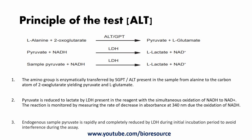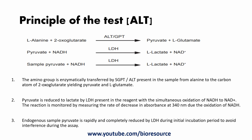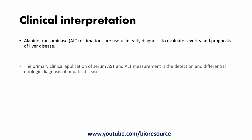Regarding the principle of the ALT test: the amino group is enzymatically transferred by SGPT or ALT present in the sample from alanine to the carbon atom of oxoglutarate, yielding pyruvate and glutamate. The pyruvate is reduced to lactate by LDH present in the reagent, with simultaneous oxidation of NADH to NAD+. The reaction is monitored by measuring the rate of decrease in absorbance at 340 nanometers. The endogenous sample pyruvate is rapidly and completely reduced by LDH during the initial incubation period to avoid interference during the assay.